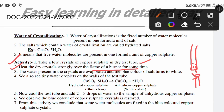When we heat it using the Bunsen burner, the water present in the crystals — the five water molecules in copper sulfate — evaporates. The blue color of the salt turns to white.